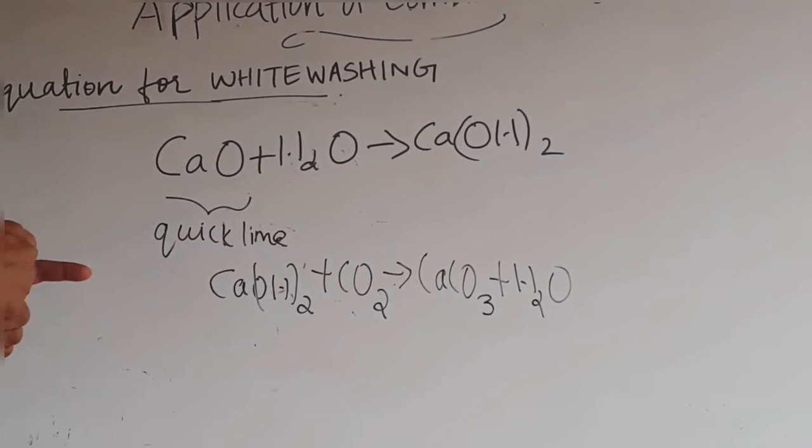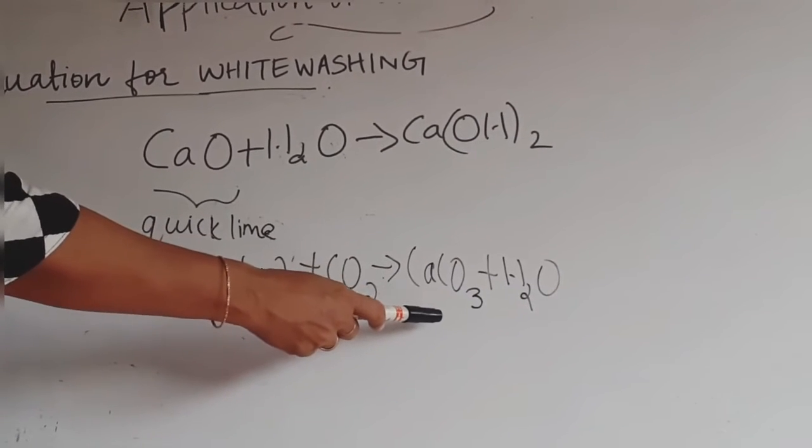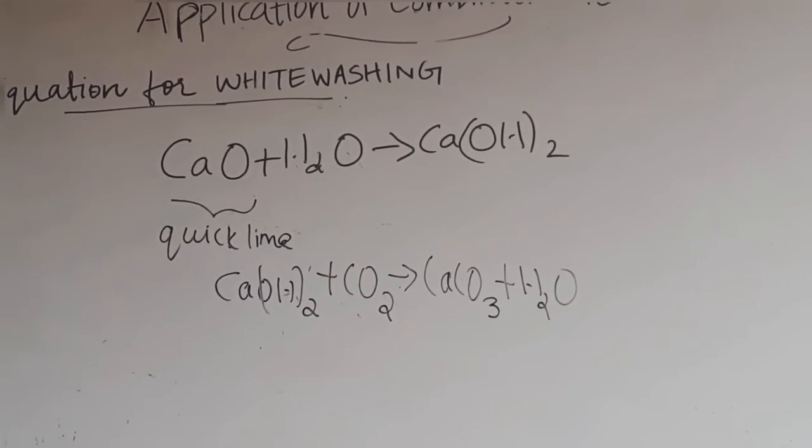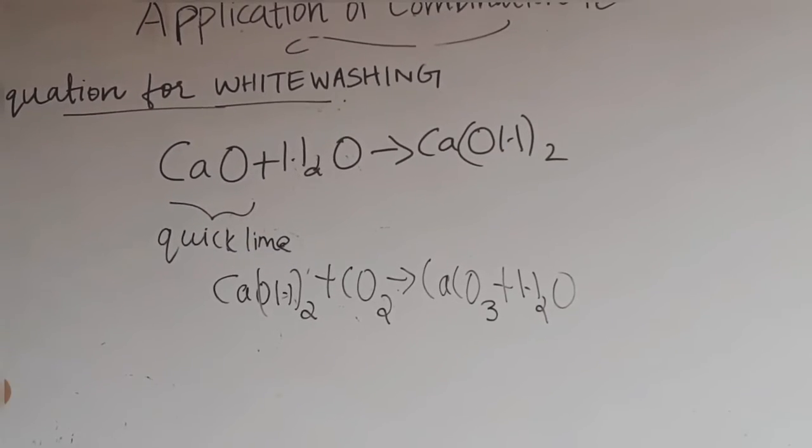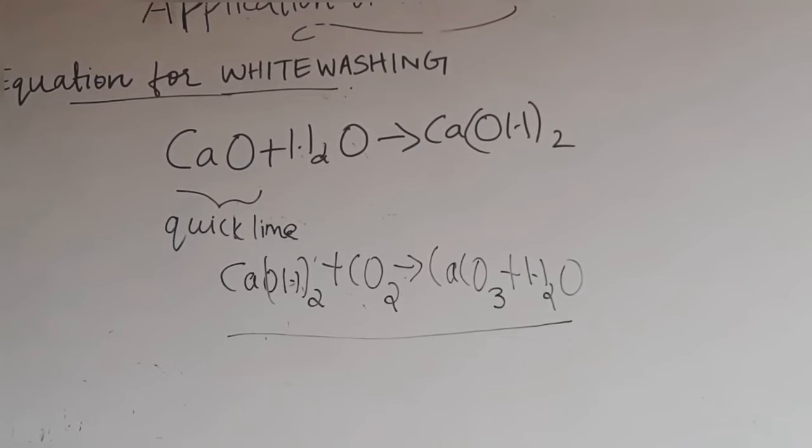This CaCO3 form is white in color. This is the compound that gives white color in the whitewashing. Now the important thing is, this equation is also used for the test for carbon dioxide.